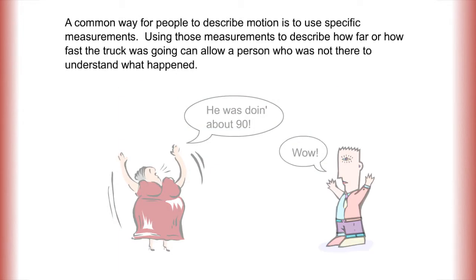A common way for people to describe motion is to use specific measurements. Using those measurements to describe how far or how fast the truck was going can allow a person who was not there to understand what happened.